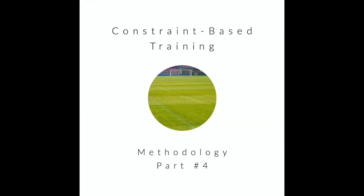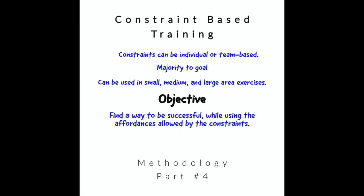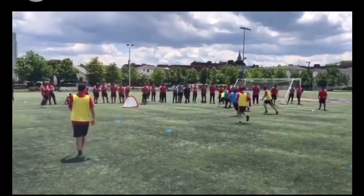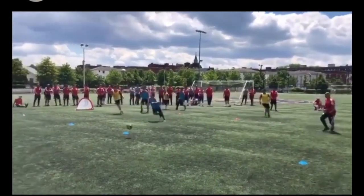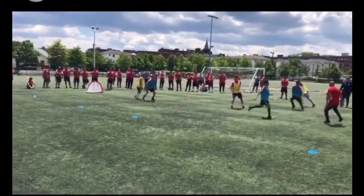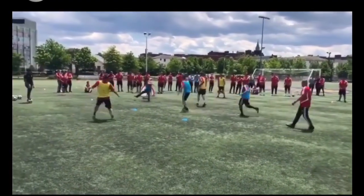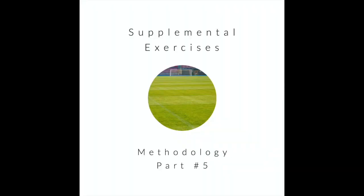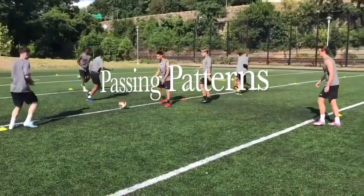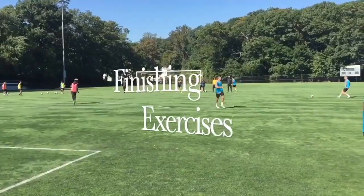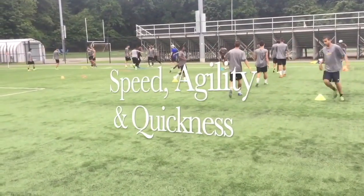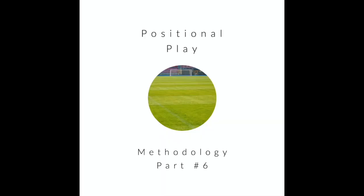Next is constraint-based training — part four in the methodology — which we went over and which is huge. This could be done individually or in exercises. Here we have basically an attacking organization model where players are constrained to certain lanes, and what happens is the constraints end up teaching players proper attacking organization structure. Constraints can do so many things; that's just one idea. Then we have supplemental exercises, which are not really based on decision-making. These are technical things — passing patterns, finishing exercises, and various speed, agility, and quickness work — supplemental things you would do outside of the regular methodology.